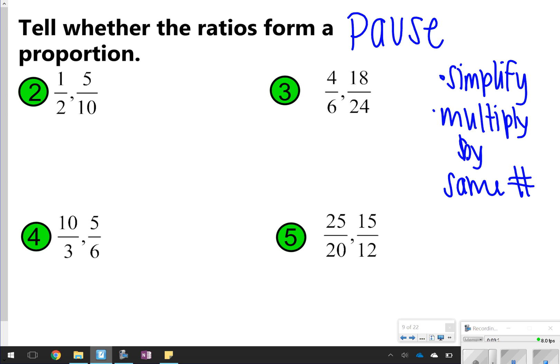All right, so number 2, I looked at, and I saw that both of these simplify to 1/2. Since 1/2 is equal to 1/2, number 2 is yes, proportional. With number 3, I noticed I could also simplify, reduce 4/6 to 2/3. And then 18 and 24 have 6 in common. So, I divided those by 6, I got 3/4. Those are not the same thing, so this would be a no for number 3.